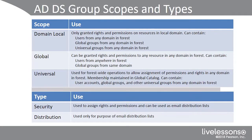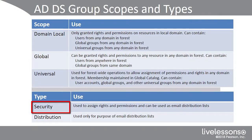Those are the three scopes of groups. In addition, we have two types of groups. Security groups can be used to assign permissions, rights, and access, and they can also be used for email distribution lists. So if you want to assign permissions and blast an email to all users within a group, security is the group type you want to create.